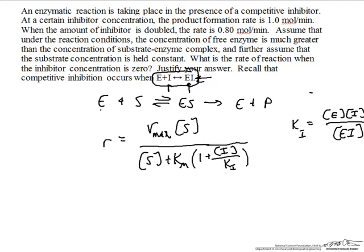Now we go back and look at our given information. We see how the rate has changed as we have changed the inhibitor concentration. We see that initially the rate is one mole per minute, and we are also told that the concentration of free enzyme is much greater than the concentration of the enzyme-substrate complex.